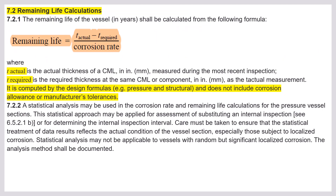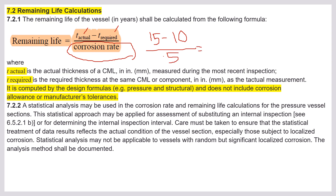For remaining life calculations, once you get the corrosion rate, the remaining life formula is: (t_actual − t_required) / corrosion rate. For example, if t_actual = 15 mm, t_required = 10 mm, and corrosion rate = 0.5 mm/year, then remaining life = (15 − 10) / 0.5 = 5 / 0.5 = 10 years. So the remaining life is 10 years.